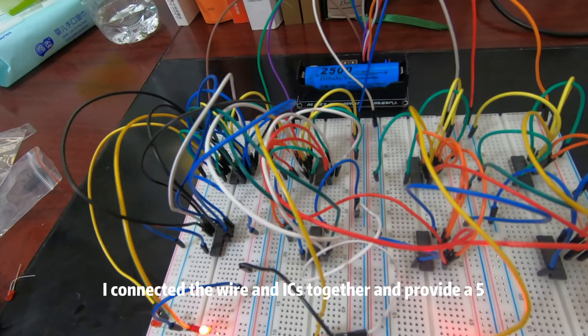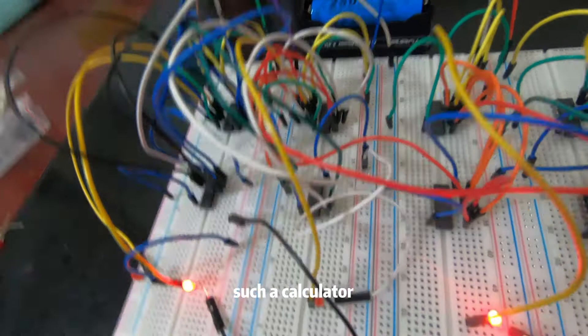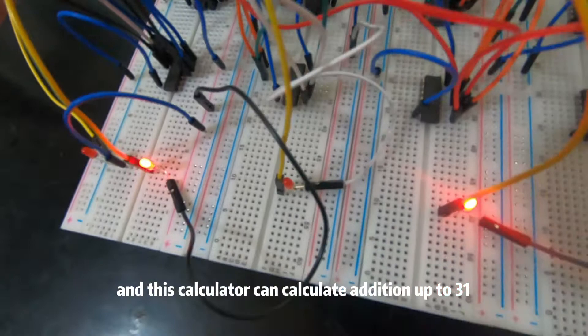I connected the wires and ICs together and provided five volts of power through a battery. This calculator can calculate addition up to 31, but you may ask why.